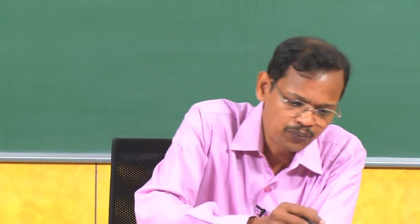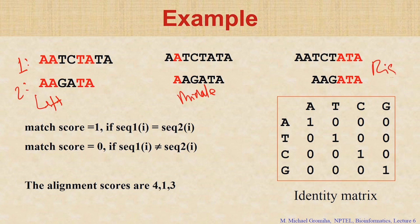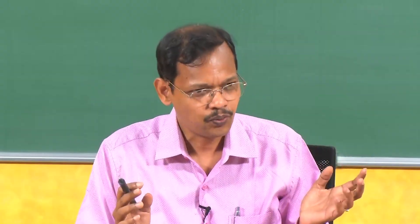So, the first sequence I put here, the second sequence I put on the left side, here I put it in the middle, and here I put it on the right side. Now we see which method is good, which alignment is the best. So we use some scores.